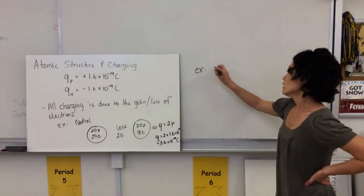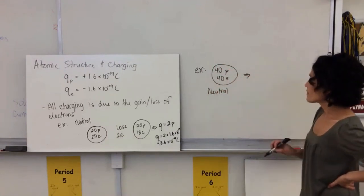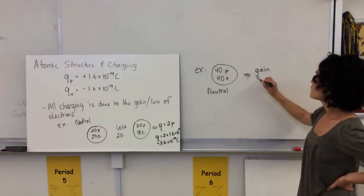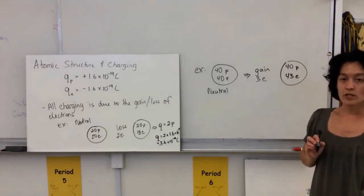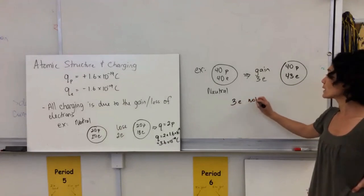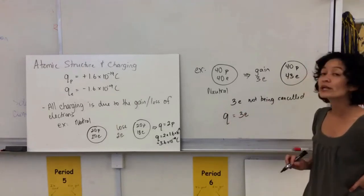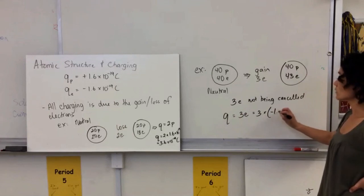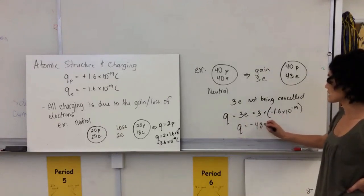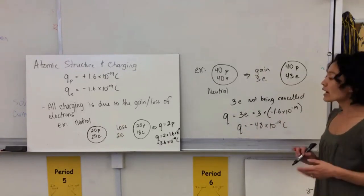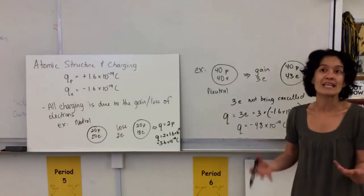Another example: a neutral object with 40 protons and 40 electrons. If I gain three electrons, I now have 40 protons and 43 electrons — three electrons are not being canceled. The charge of this object is the charge of three electrons: 3 × (−1.6×10⁻¹⁹) coulombs. So you have a positive charge if you lose electrons and a negative charge if you gain electrons, and you can calculate the exact charge value if you know how many electrons were gained or lost.